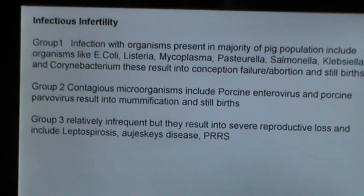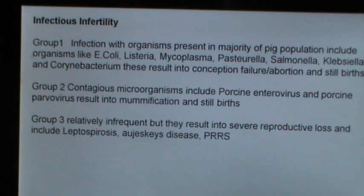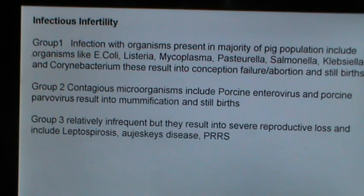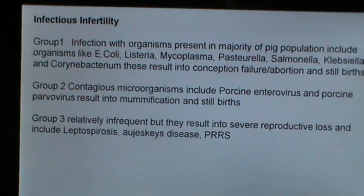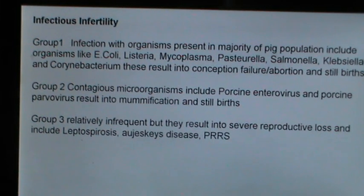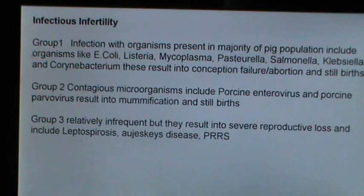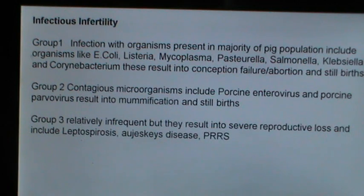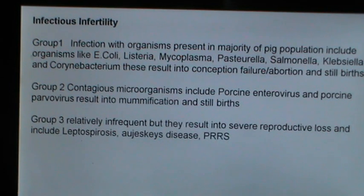Infectious infertility can be classified into three groups. Group 1: infections with organisms present in the majority of pig populations, including E. coli, Listeria, Mycoplasma, Pasteurella, Salmonella, Klebsiella, and Corynebacterium — resulting in conception failure, abortion, and stillbirths. Group 2: contagious microorganisms including porcine enterovirus and porcine parvovirus, resulting in mummification and stillbirths. Group 3: relatively infrequent but causing severe reproductive loss, including leptospirosis, Aujeszky's disease, and PRRS.